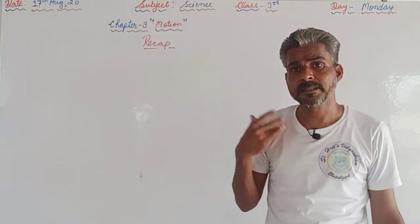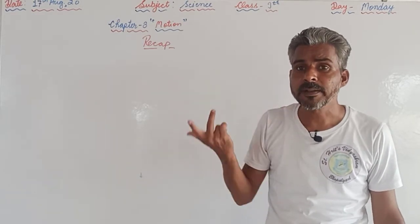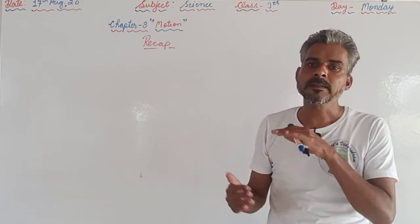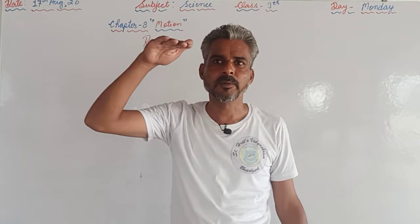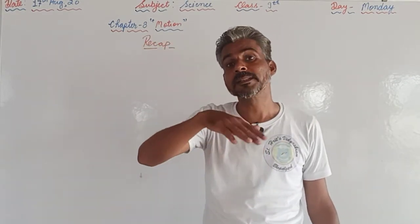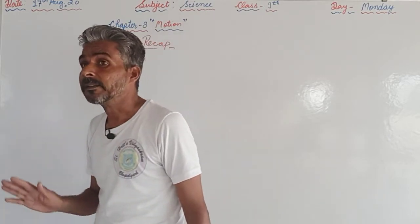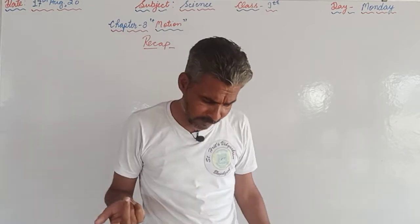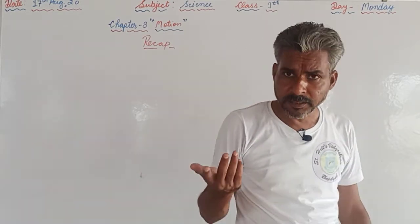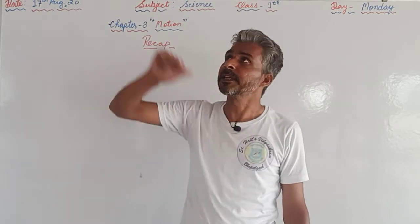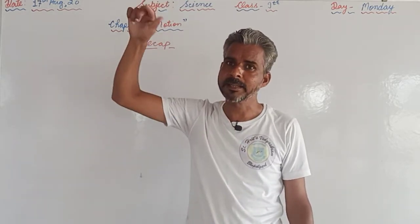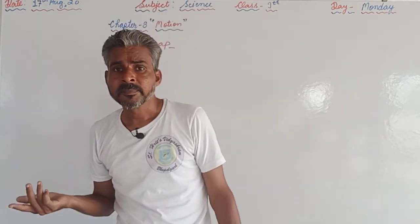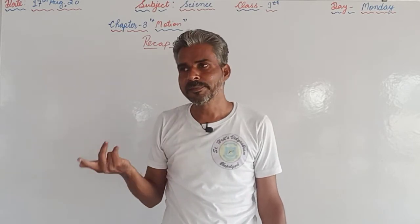We discussed acceleration — the rate of change of velocity. If the rate of change of velocity is negative, it is called retardation. When velocity is decreasing, the object is under retardation; when increasing, it is under acceleration. We also discussed graphs: for uniform motion, the distance-time graph is a straight line inclined to the time axis.